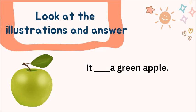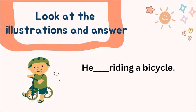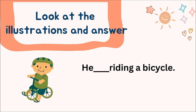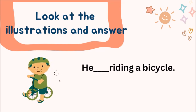Now, there is a picture given. It ___ a green apple. The answer will be: is. The next one is: he ___ riding a bicycle. Please guess. Yes, and the answer is: is.